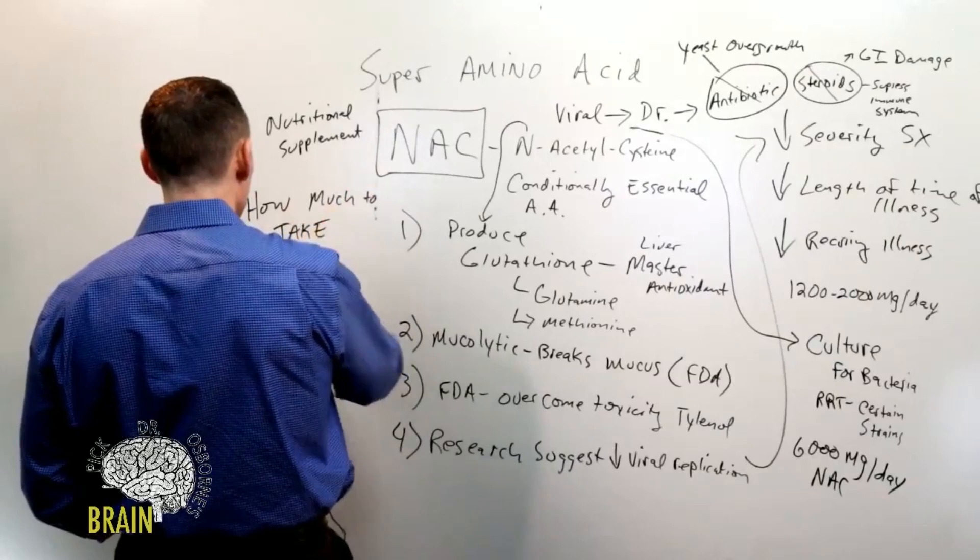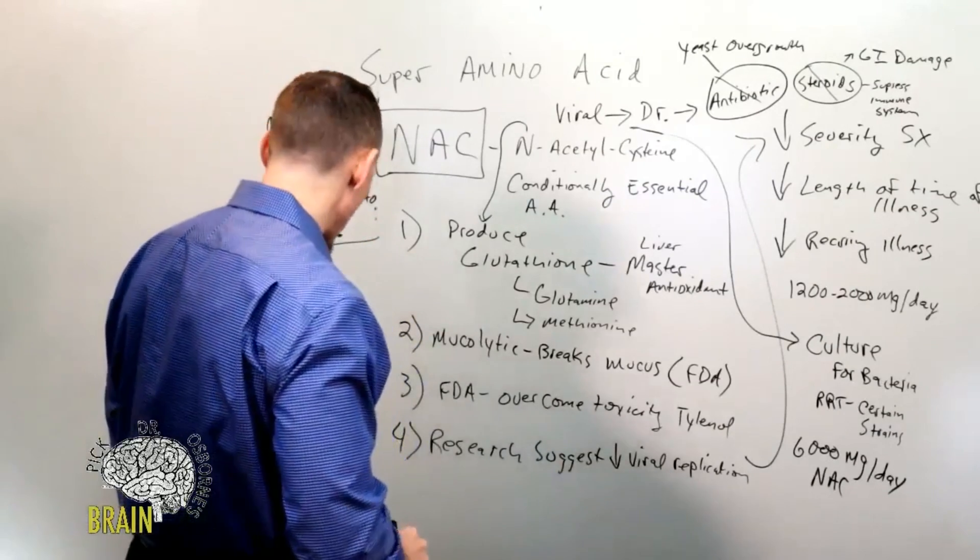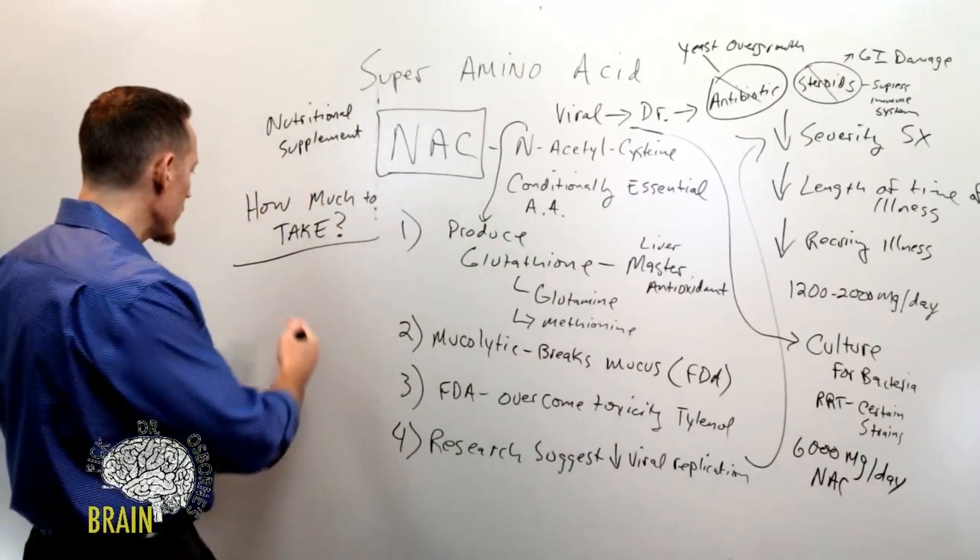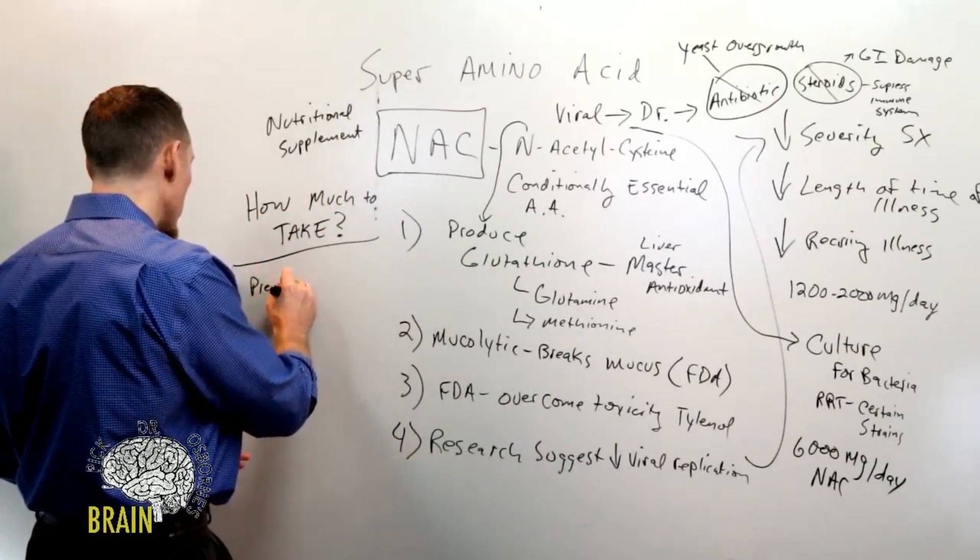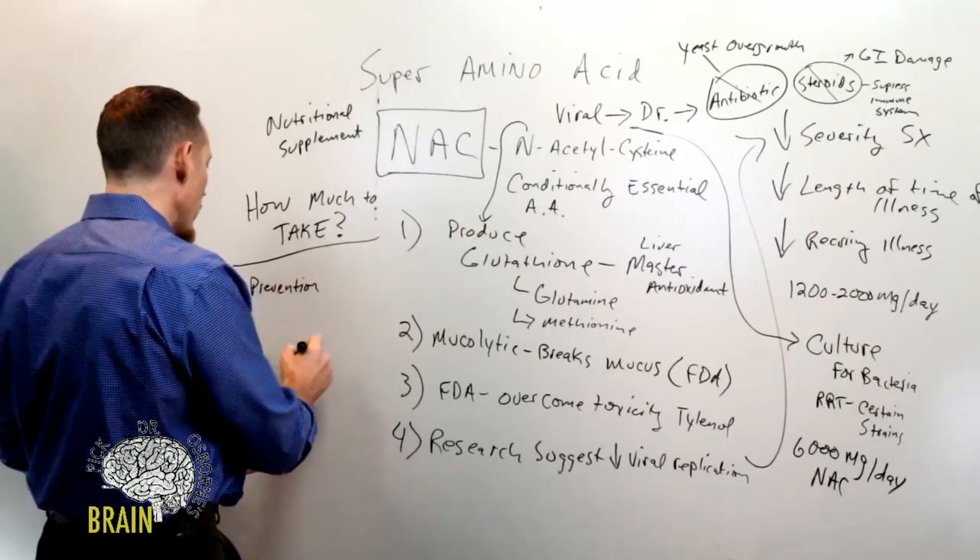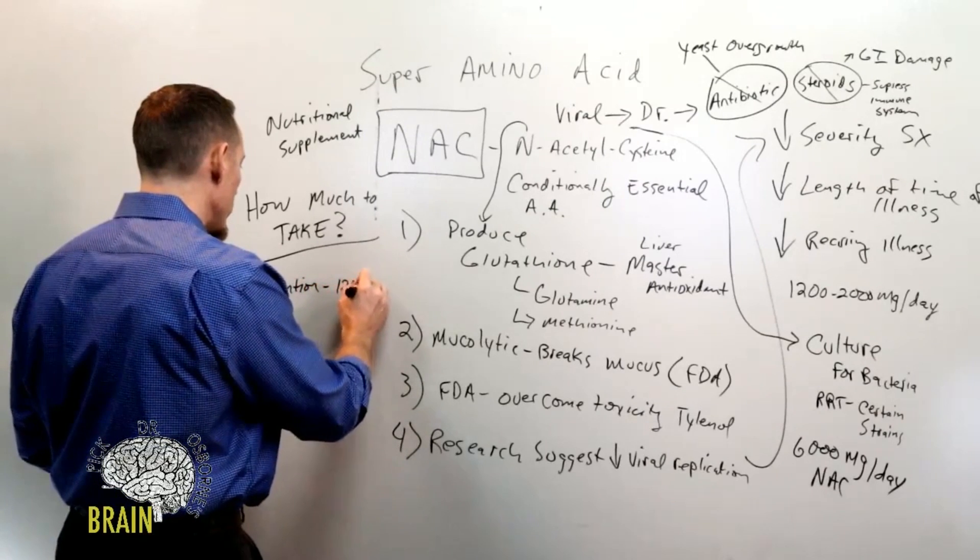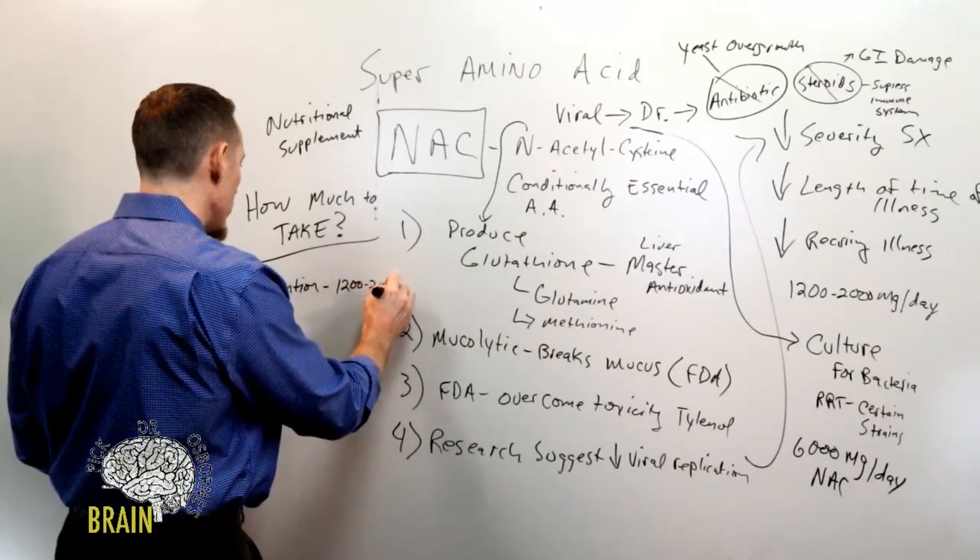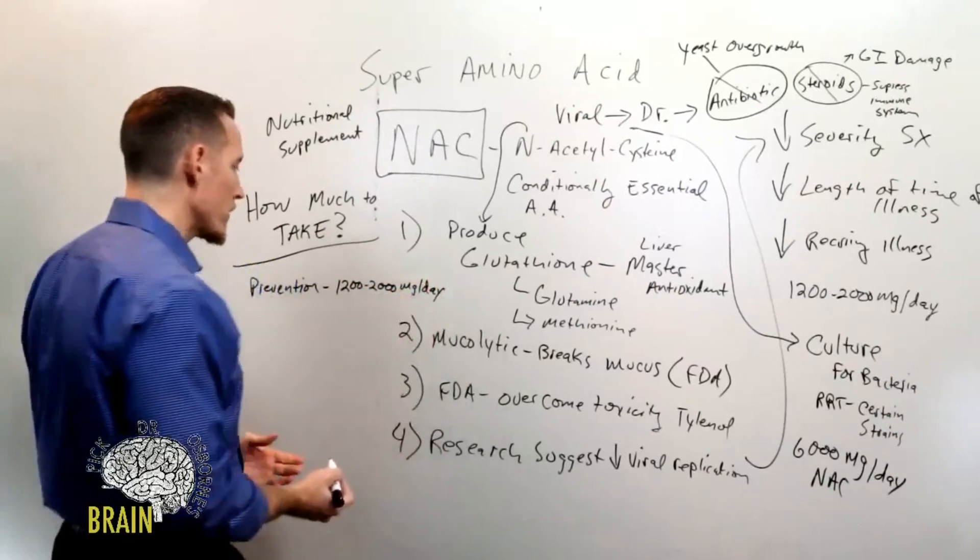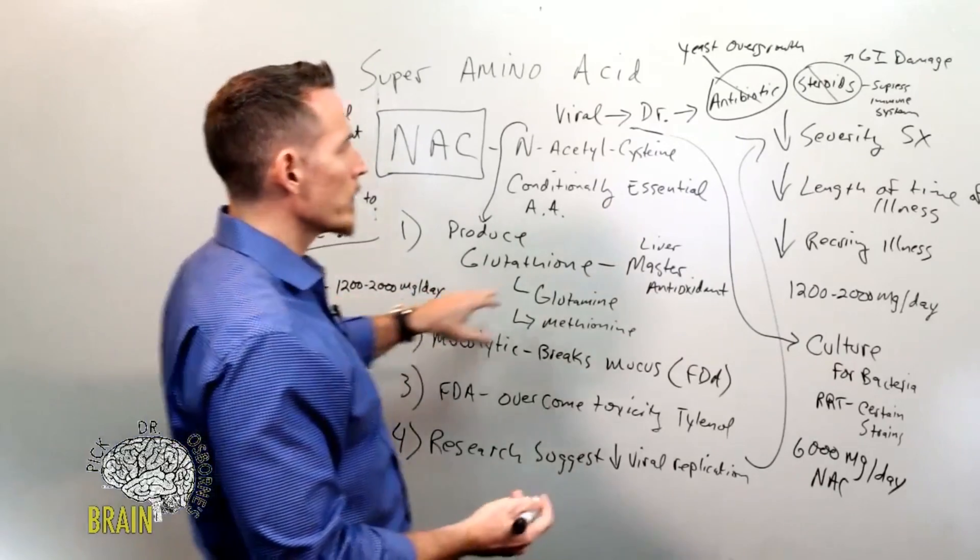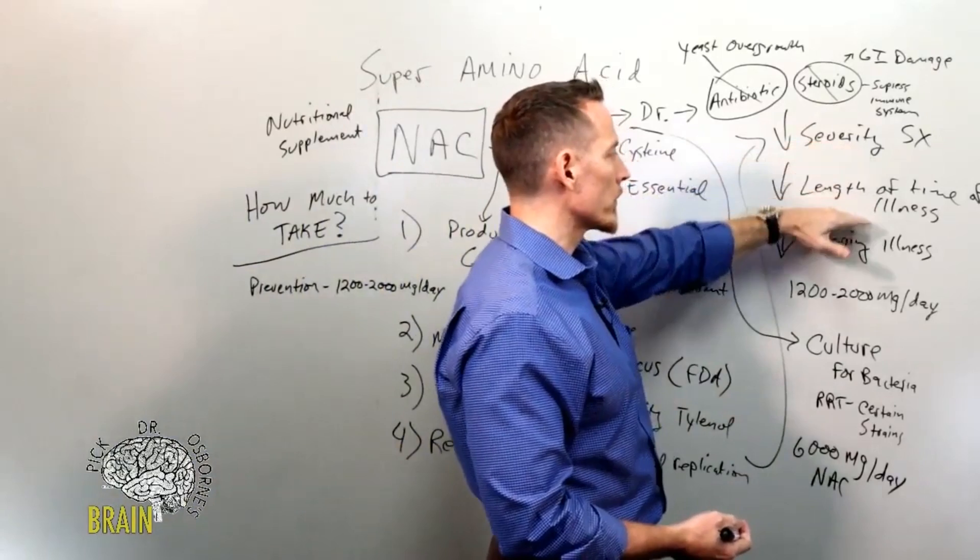So you're picking this up at the store and you need to know how much to take to be effective. If we're talking about a preventative dose, meaning you're not sick, what do you want to take for prevention? Anywhere between 1200 and 2000 milligrams per day. Actually, I mentioned the research study earlier - it was this quantity that was given to elderly patients that showed these results.